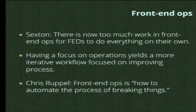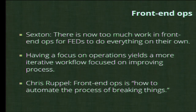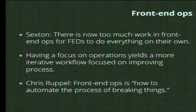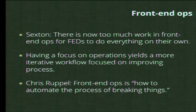As Sexton says, there's now too much work for front-end developers to do on their own. There has to be some automation to reduce the amount of time spent on this work. Having a focus on operations yields a much more iterative workflow — we can do things and test things a lot faster. As Chris Ruppel says, front-end ops is how to automate the process of breaking things. When you accidentally introduce a bug in your CSS or JavaScript, you want to catch that immediately, not dig through a thousand lines of code.